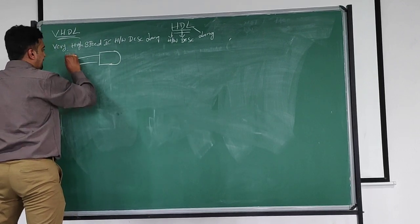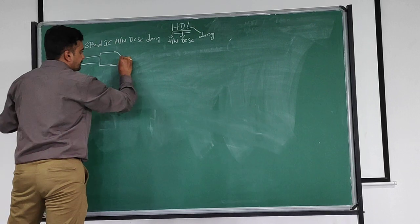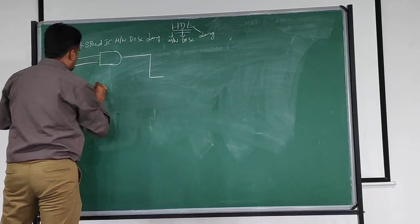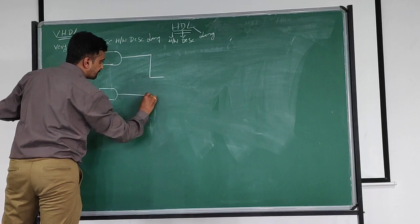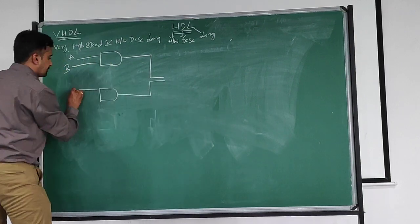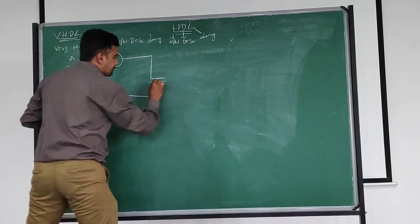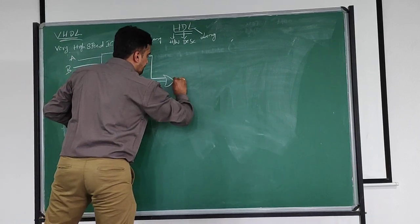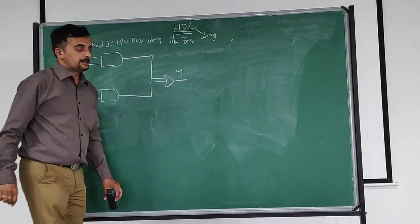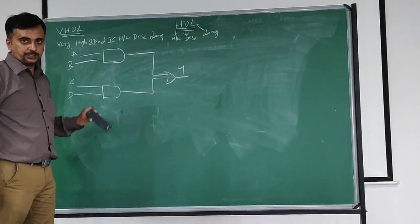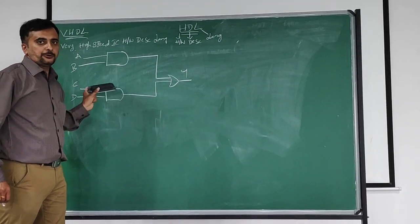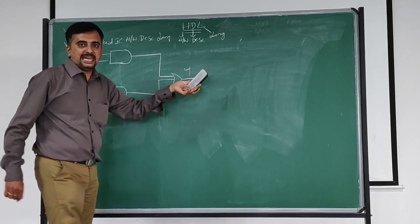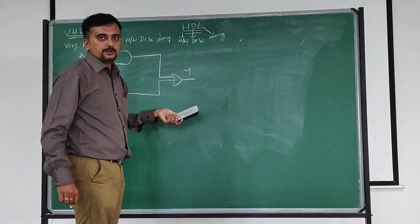This is a gate A and gate. This is circuit A1 for this program. By seeing this circuit, we have to write a VHDL.